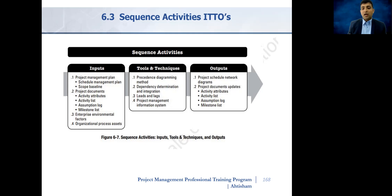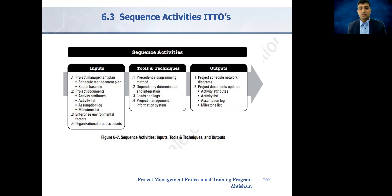Among the outputs, we have the project schedule network diagram, and we will update various documents such as the activity list, milestone chart, assumption log, as well as activity attributes.